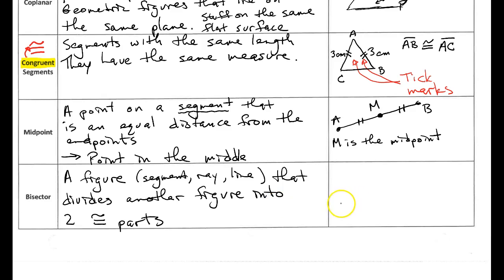So let's say I have a segment here because we'll bisect segments a lot. And we'll call that AB. And I'm going to draw another line that goes right through the middle. Okay so here's line CD.